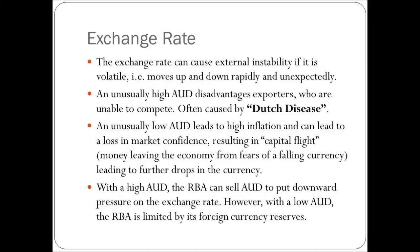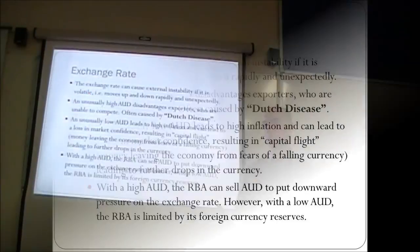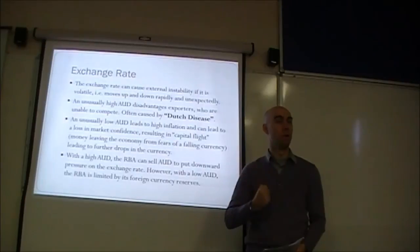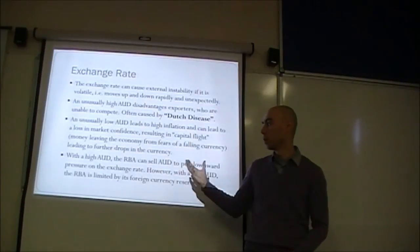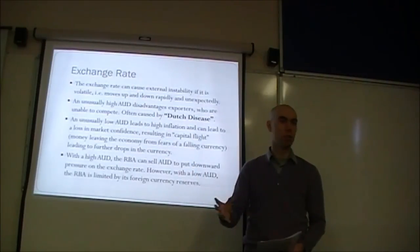This results in capital flight — money leaving the economy for fears of a falling currency, leading to further drops in the currency. That's what we saw in Thailand — currency dropped and so more investors pulled their money out. With a high Australian dollar, the RBA can sell Australian dollars to put downward pressure on the exchange rate. So a high Australian dollar is sustainable in terms of central bank intervention. However, with a low Australian dollar, the Reserve Bank is limited by its foreign currency reserves — they don't have unlimited foreign currency reserves with which to buy Australian dollars and prop it up. With a high Australian dollar, they have unlimited Australian dollars to sell.